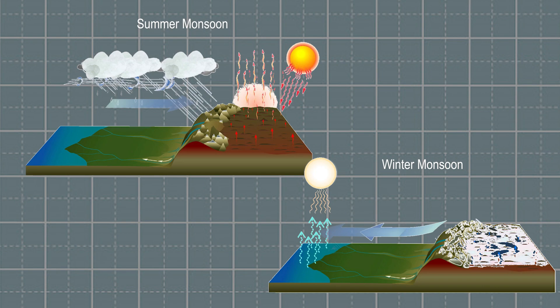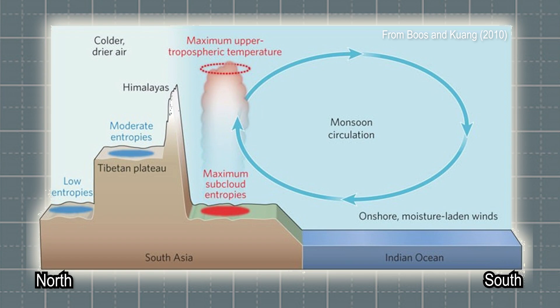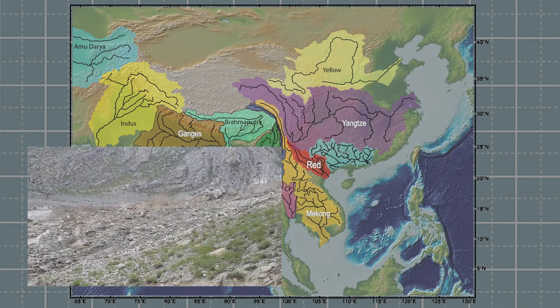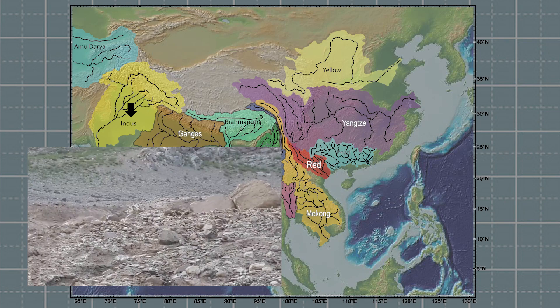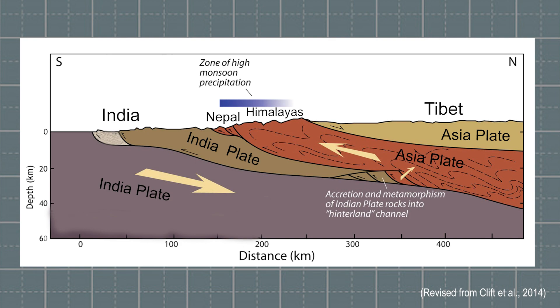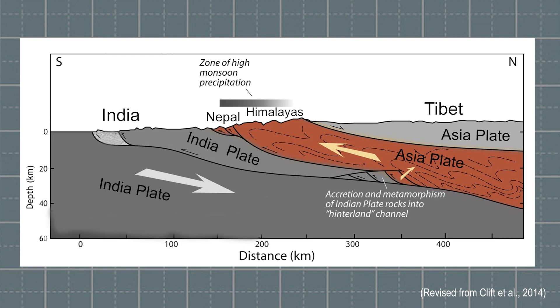This rise strengthened the South Asian monsoon. As a result, an important feedback occurred. Increased rainfall from the stronger monsoon led to increased erosion of the mountains, and so to more sediment being carried by the Indus, Ganges and Brahmaputra rivers into the deep Indian Ocean. Strong uplift and intense erosion allow deep crust to rise to the surface and be exposed as the metamorphic rocks of the high Himalayas today.